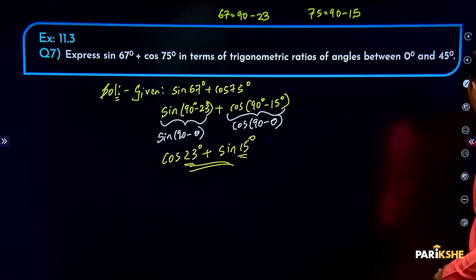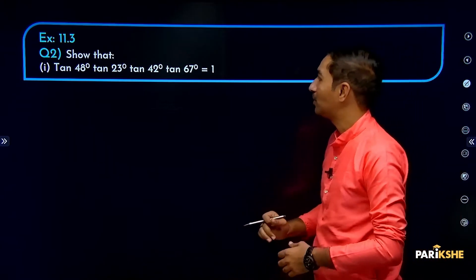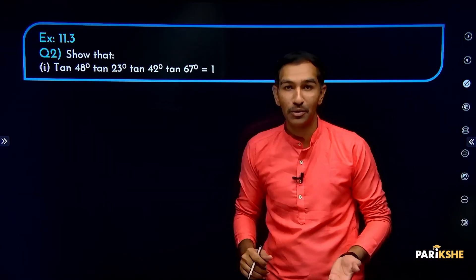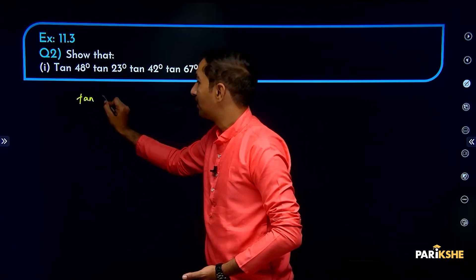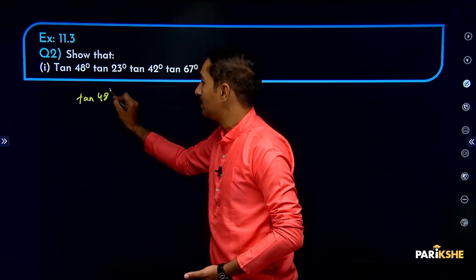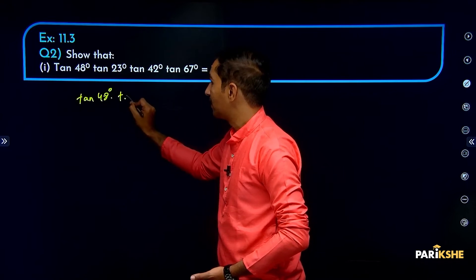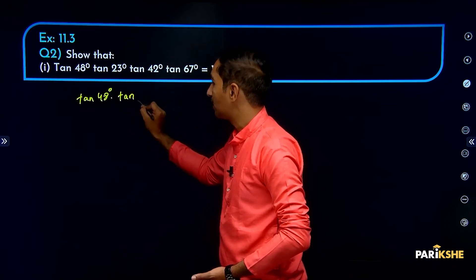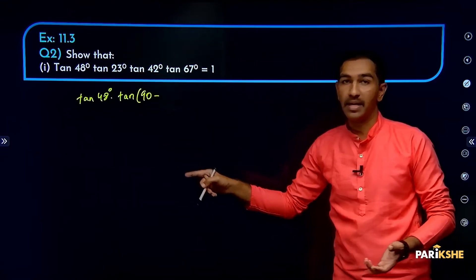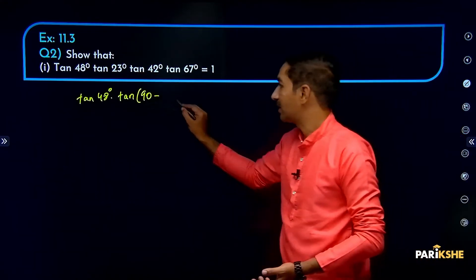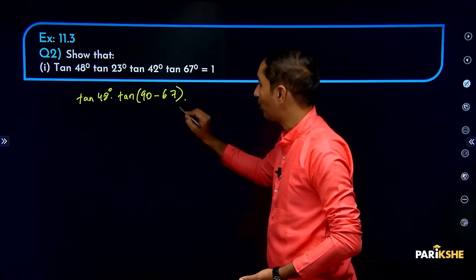Next question: Show that tan 48° × tan 23° × tan 42° × tan 67° = 1. For tan 48, we write it as is. For tan 23, we write it as tan(90 - 67), which equals 67. For tan 42, we write it as tan(90 - 48) — since 90 minus 48 gives 42.